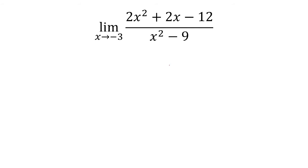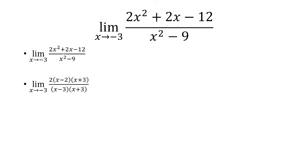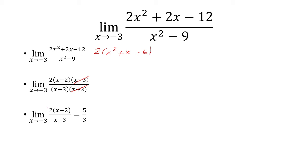The next one: if I plug in negative 3, I get 0 over 0, so that means I have to factor this out. First, we factor out a 2 and get x squared plus x minus 6. Factoring that out, we get x minus 2 times x plus 3. The denominator factors into x minus 3 and x plus 3, so the x plus 3s are going to cancel. Now I can plug in negative 3 to get 5 over 3.